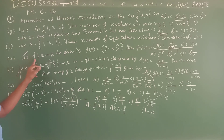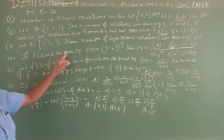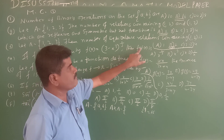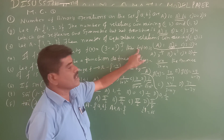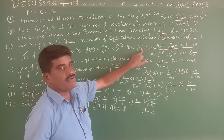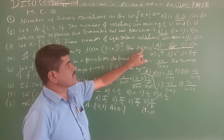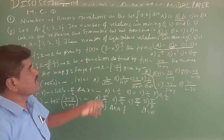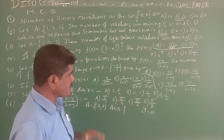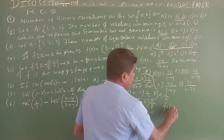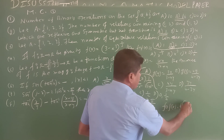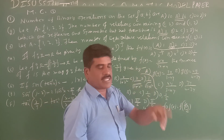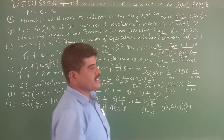Fourth one: If f from real numbers to real numbers is given by f(x) = (3 - x³)^(1/3), then find f∘f(x). Writing f(f(x)) and substituting f(x) in place of x, after simplification, the answer is Option C, which is x.